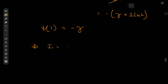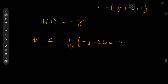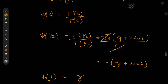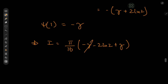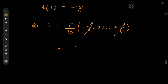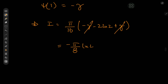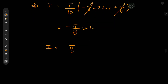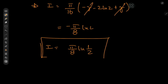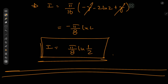So I = (√π / 16) · Γ(1/2) / Γ(1) · [ψ(1/2) − ψ(1)]. Since Γ(1) = 1 and Γ(1/2) = √π, this becomes (π/16) · [(−γ − 2·log 2) − (−γ)]. The Euler–Mascheroni constants cancel, leaving (π/16)·(−2·log 2) = −(π/8)·log 2, or equivalently π/8 · log(1/2). That was pretty cool! I hope you enjoyed the video — be sure to like and subscribe, follow on Instagram, and support on Patreon. See you next time.